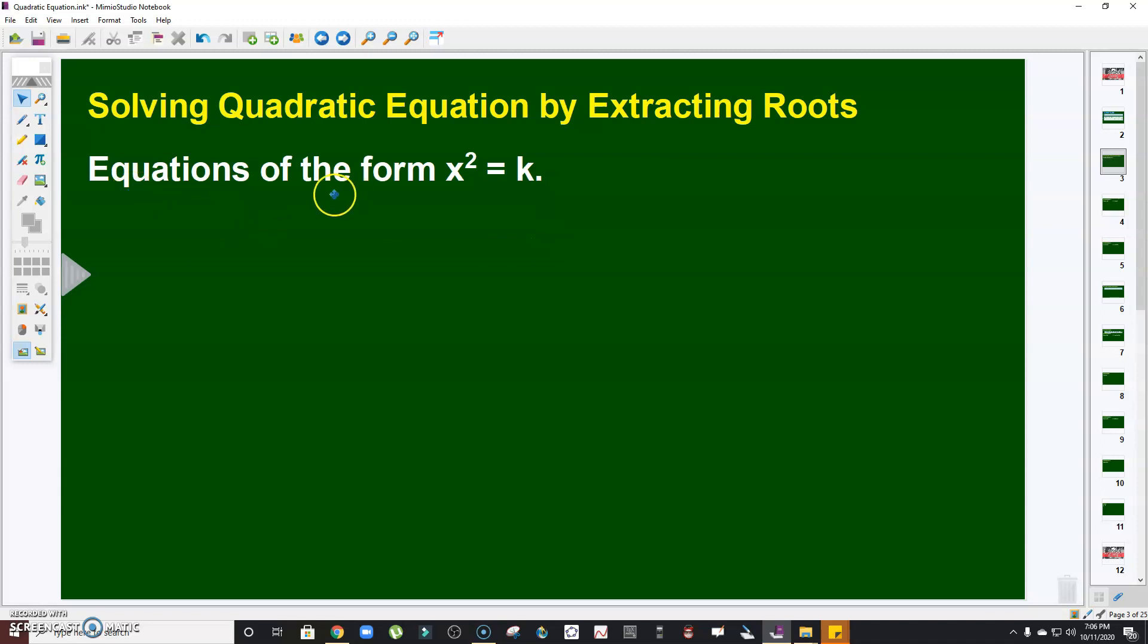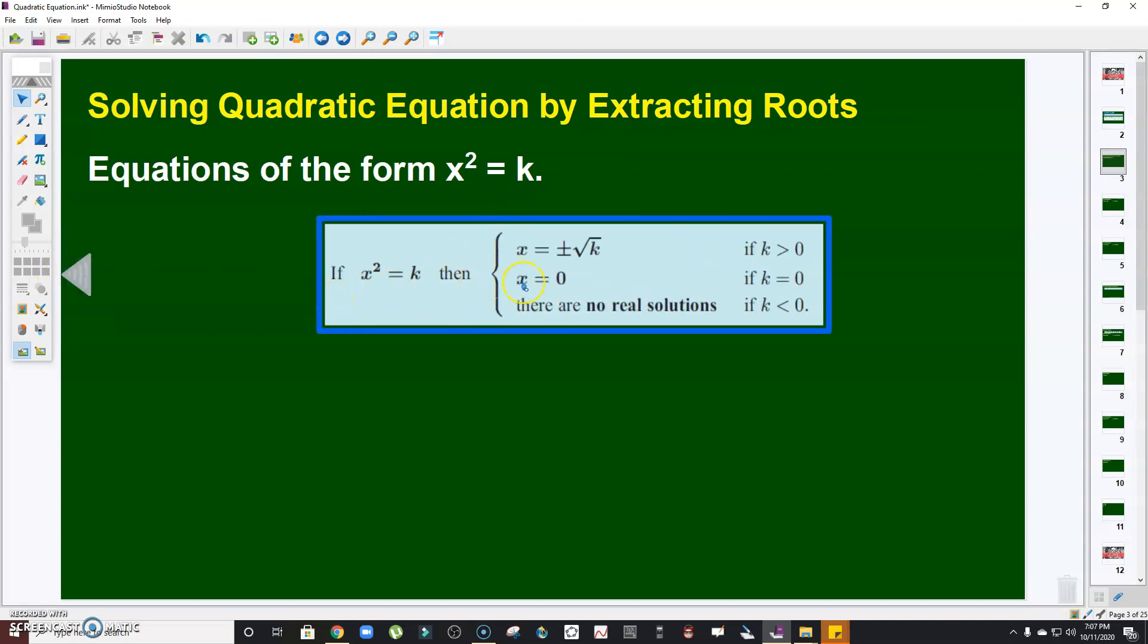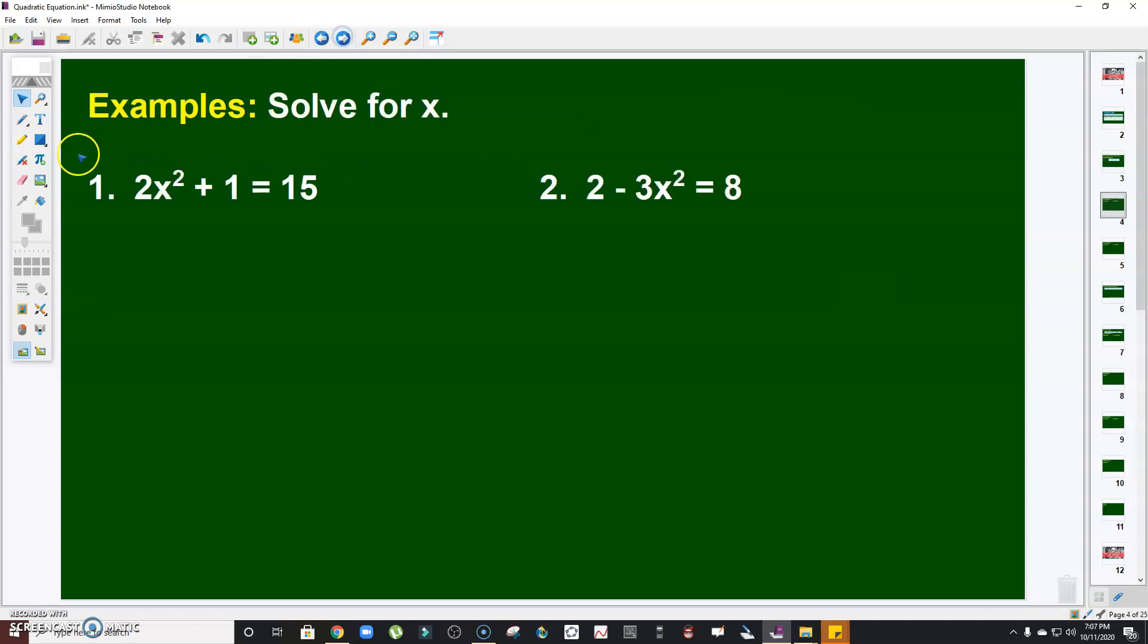Equations of the form x² = k can be solved by simply extracting the roots. Take note of this. There are three possible cases here. If x² = k, then x = ±√k if k is greater than 0. x is 0 if k is 0. There are no real solutions if k is less than 0 or negative.